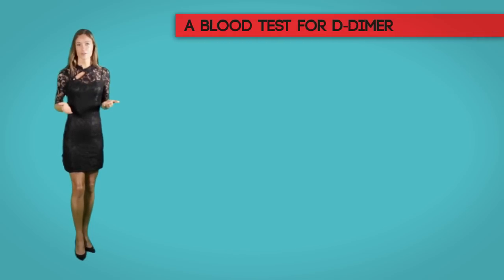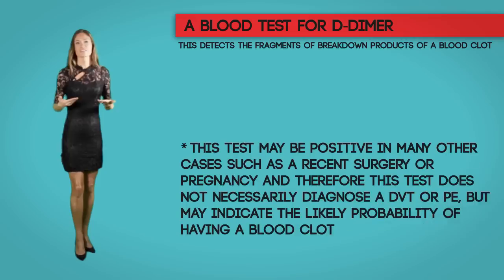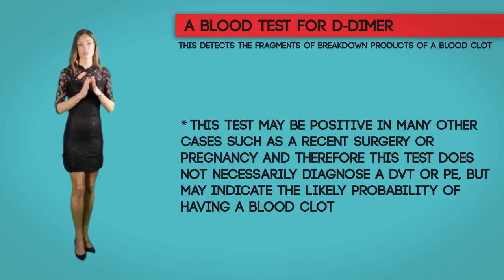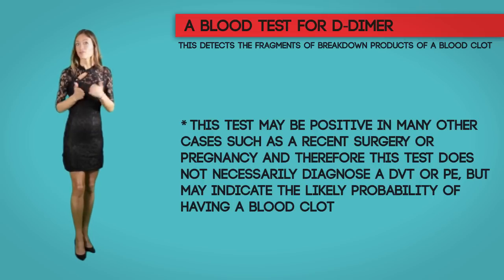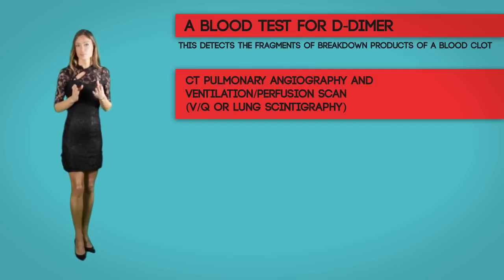Multiple diagnostic tests may be conducted to confirm the diagnosis. A blood test called the D-dimer detects fragments of breakdown products of a blood clot — the higher the fragment level, the more likely there is a blood clot in the vein. However, this test may be positive in other cases such as recent surgery or pregnancy, so it does not definitively diagnose a DVT or PE but may indicate the probability of a blood clot and help decide if further tests are needed. CT pulmonary angiography and ventilation perfusion scan, also called a VQ scan, are also used.